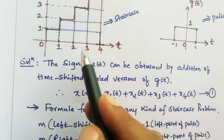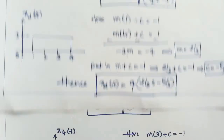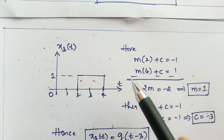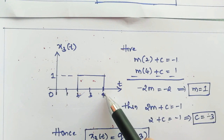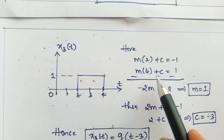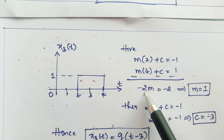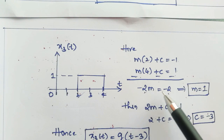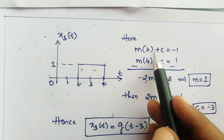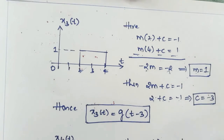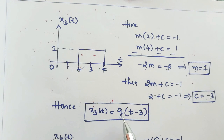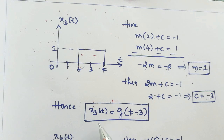For the third step, which goes from 2 to 4, the left point is 2: M × 2 + C = −1. The right point is 4: M × 4 + C = 1. Subtracting gives −2M = −2, so M = 1. Substituting back: 2 + C = −1, giving C = −3. Therefore X3 of T = G(T − 3).